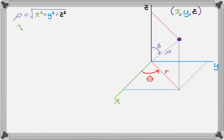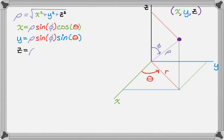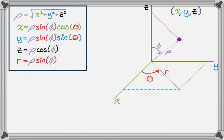We figured out that x is rho sine phi cosine theta. We figured out that y is rho sine phi sine theta. We figured out z is rho cosine of phi. And we also know that r is equal to rho sine of phi, which is very useful to know.